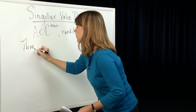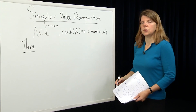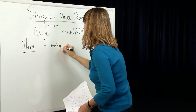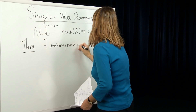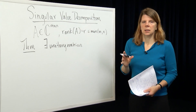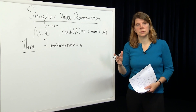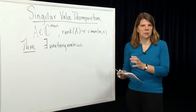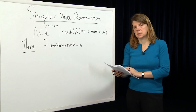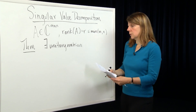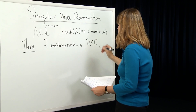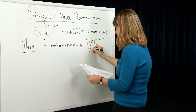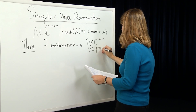Then the theorem about singular value decomposition states the following. There exist unitary matrices U and V. A unitary matrix U is one such that U* U equals U U* equals the identity. U* U and U U* may be of different dimensions, but that product is the identity matrix in the appropriate dimension. In SVD, U is an m by m dimensional matrix, and V is an n by n dimensional matrix.